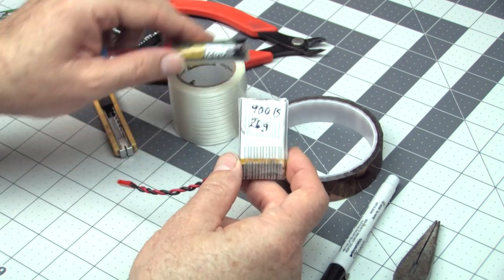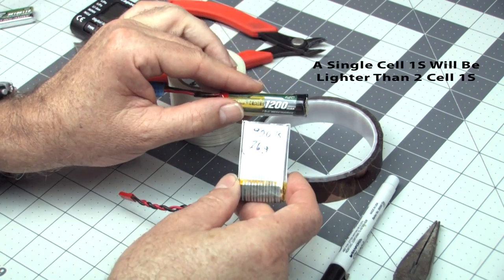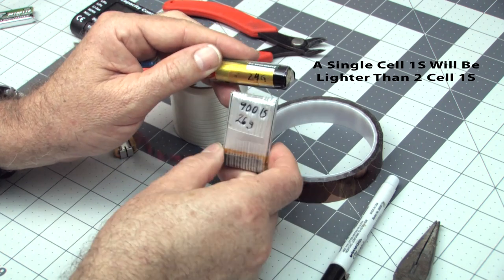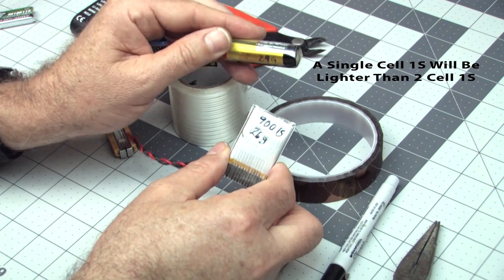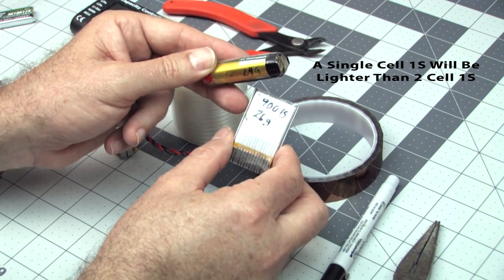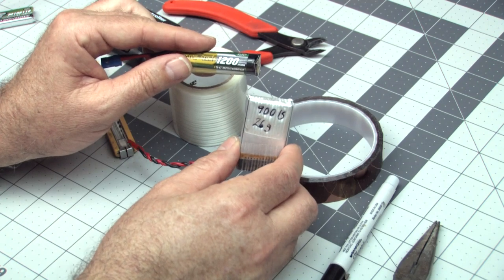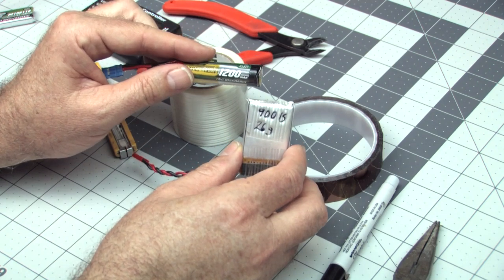But let's compare that to a 1200 1S cylindrical cell here, which is actually lighter. This is 24 grams. This one's 26. So we're getting more capacity with this one because there's a lot of duplication in the pack - foil and all that kind of stuff. This is a good way to convert any 2S pack to a 1S.